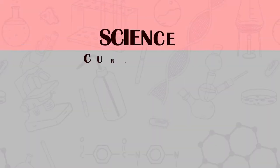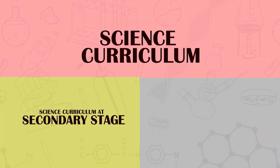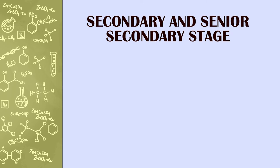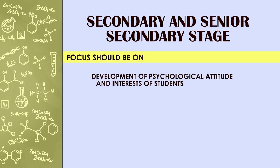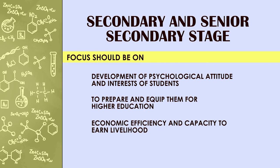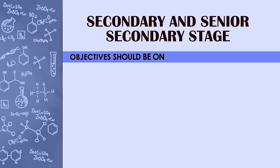Science curriculum is to be studied at secondary stage and at senior secondary stage. At the secondary and senior secondary stage, the focus of science curriculum should be upon development of psychological attitude and interests of students, to prepare and equip them for higher education, economic efficiency, and capacity to earn livelihood. While teaching science at secondary and senior secondary stage, the objectives include knowledge of basic principles, facts and terminology, basic understanding of science, application of science skills, along with development of attitude, interest, and appreciation.